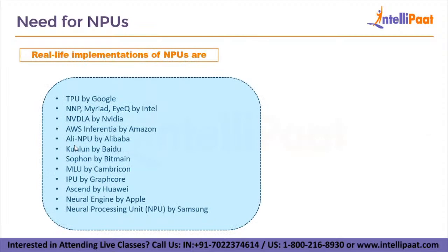Here are some real-life implementations of NPUs: the Tensor Processing Unit (TPU) by Google, NNP Myriad IQ by Intel, NVDLA by NVIDIA, AWS Inferentia by Amazon Web Services, AliNPU by Alibaba Cloud, Kunlun by Baidu, Sophon by Bitmain, MLU by Cambricon, IPU by Graphcore, Ascend by Huawei, Neural Engine by Apple, and Neural Processing Unit by Samsung. All these are the different NPUs available in the market, provided by different vendors.